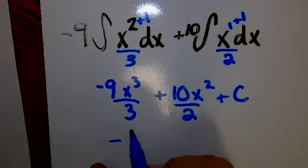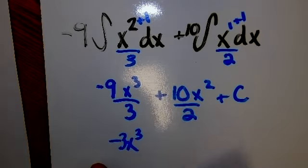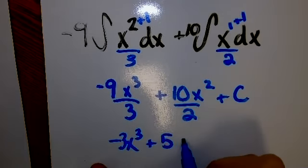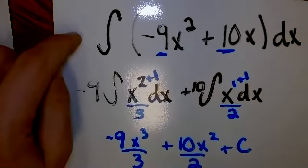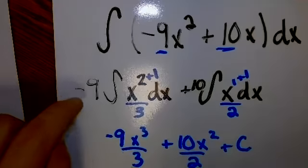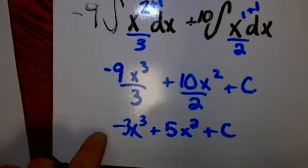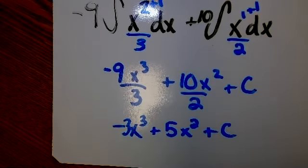So to simplify down, 9 over 3, of course, we just have negative 3x to the third, and then 10 over 2, 5x squared, plus c. So we start with the original, we rewrite it using our properties, we take the integral, and then we simplify. Not too bad if it's just a power rule.